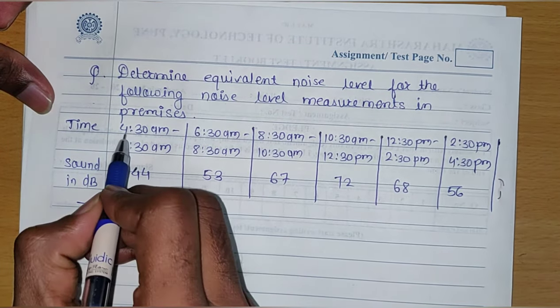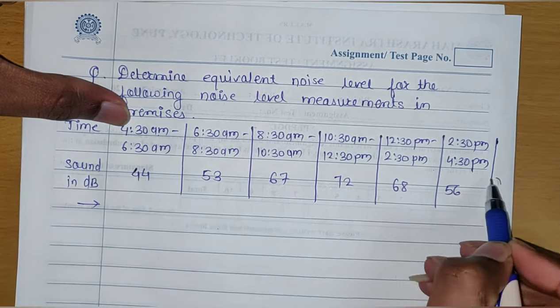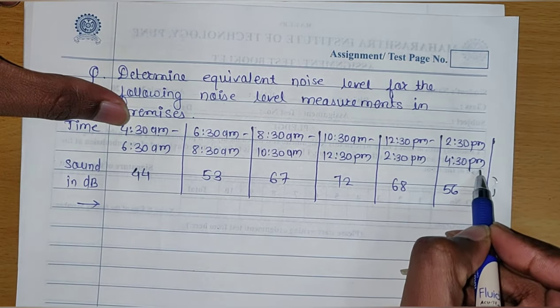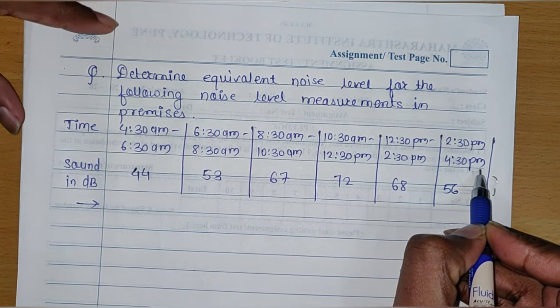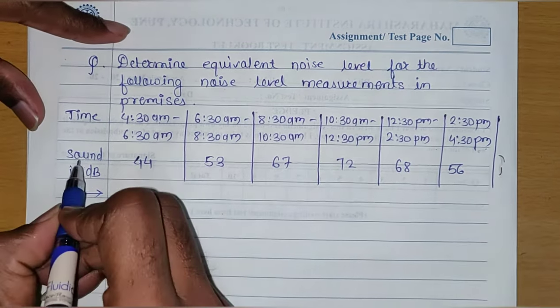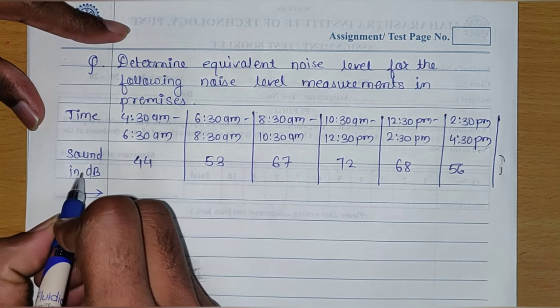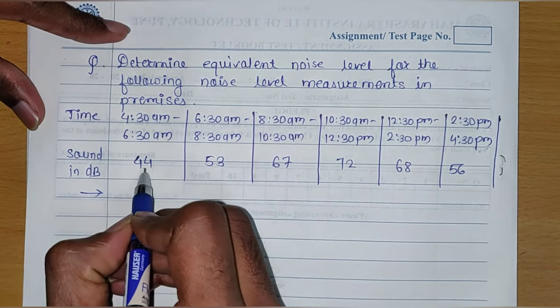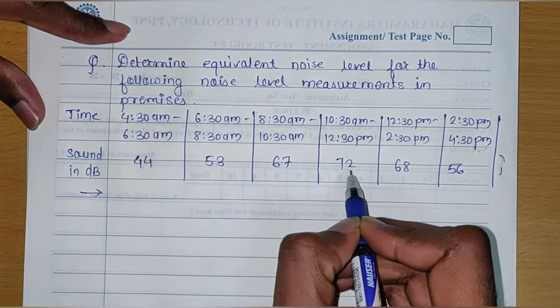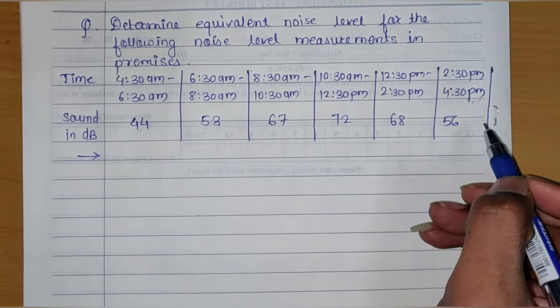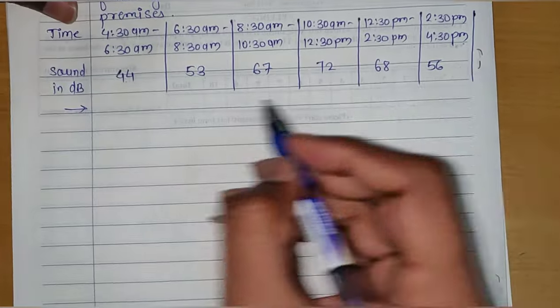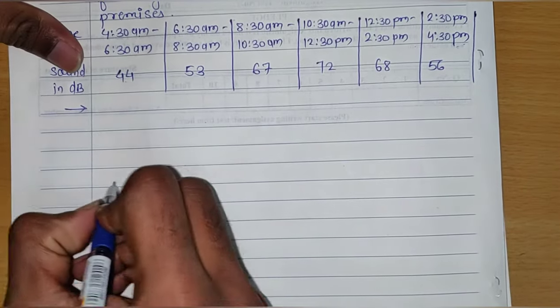That means from 4:30 AM to 4:30 PM. The total sampling duration is 12 hours, and the sound pressure levels in decibels are 44 dB, 53 dB, 67 dB, 72 dB, 68 dB, and 56 dB. First, I will tell you the formula for finding the equivalent noise level.